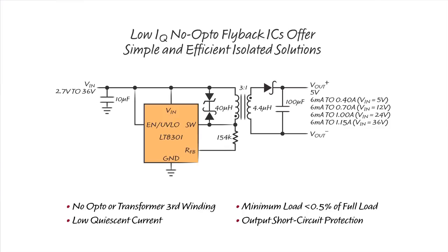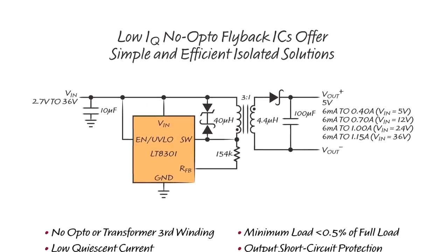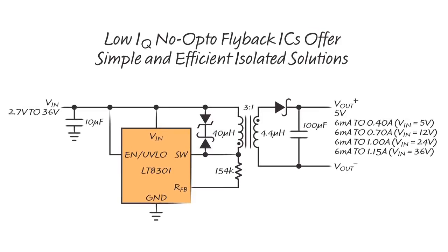To give you an example, here is a 5-volt isolated flyback converter from a 2.7-volt to 36-volt input using the LT8301, a recent part in our Low IQ No Opto Flyback family. Housed in a TSOT-23-5 package,